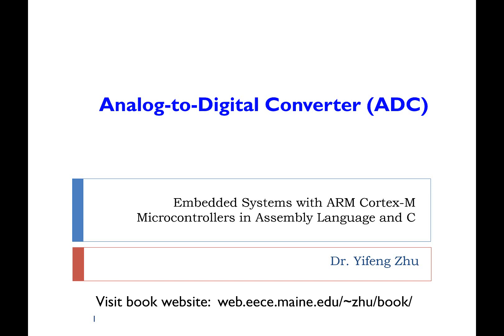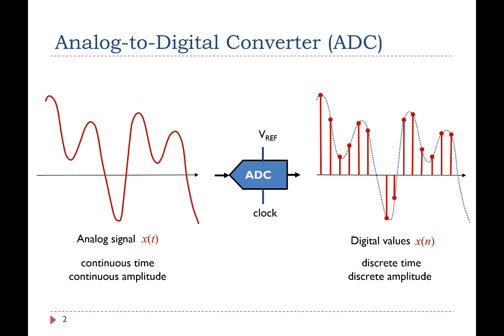Hello. Welcome to this short lecture on analog-to-digital converter, ADC. An ADC converts a continuous-time and continuous-amplitude analog signal, such as the output of a sensor, to a discrete-time and discrete-amplitude digital signal.